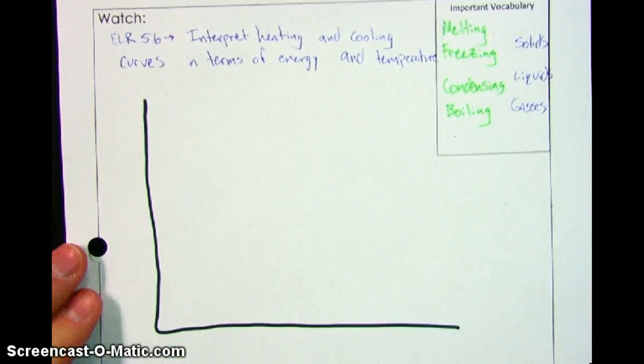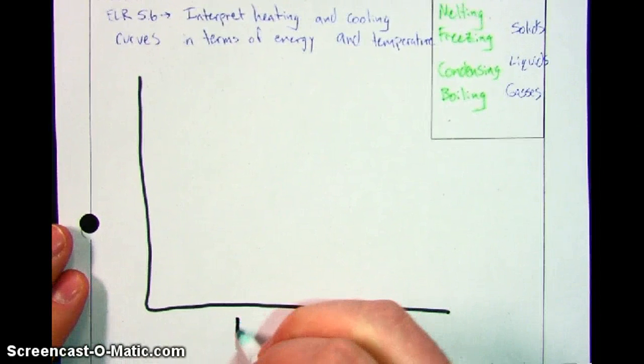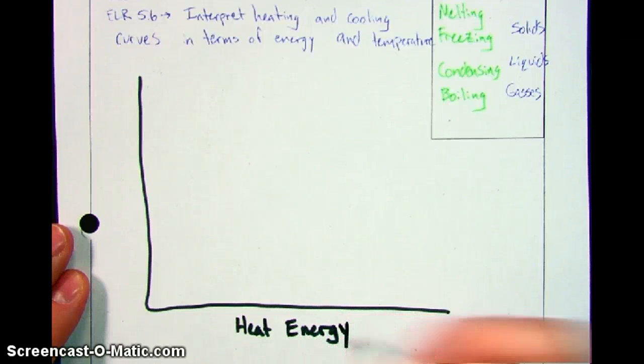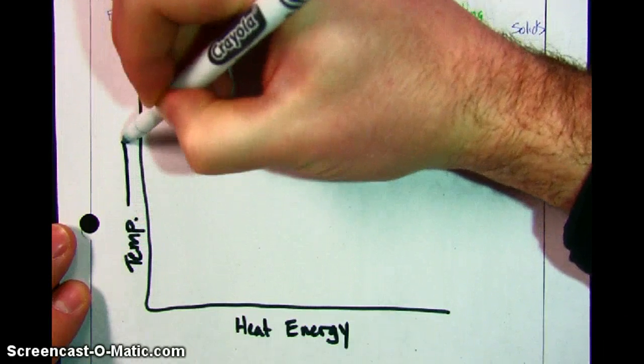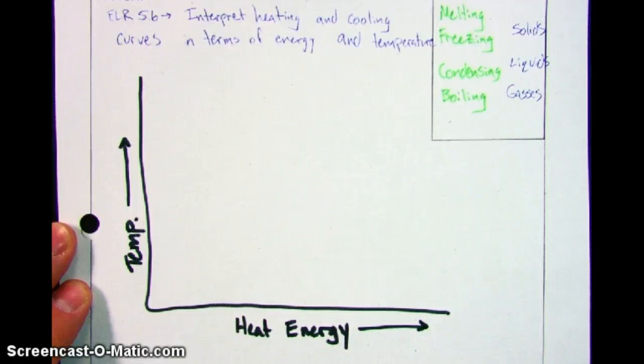On this graph, what you're going to need to do is label the axes with heat energy on the x-axis, and then on the y-axis, we want temperature. As you go up that way, temperature is increasing, and as we go up that way, heat energy is increasing.